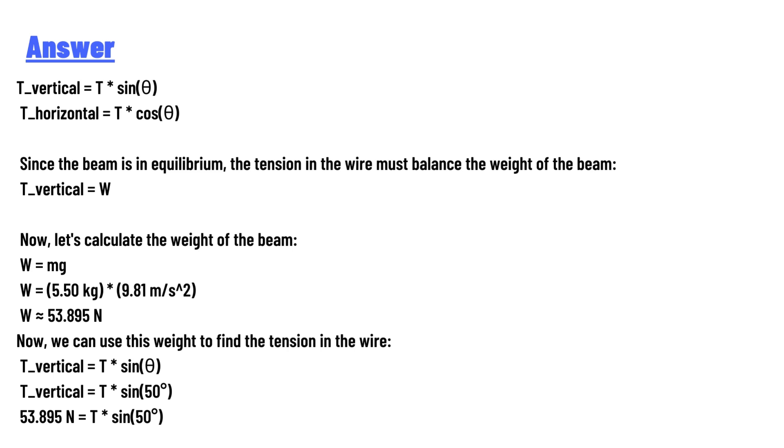Now let's calculate the weight of the beam: W = mg, W = (5.50 kg)·(9.81 m/s²), W = 53.895 N. Now we can use this weight to find the tension in the wire.